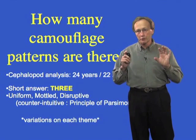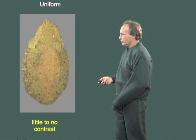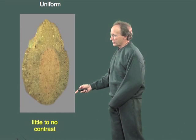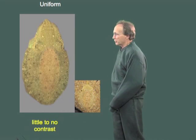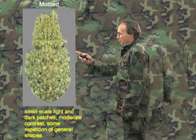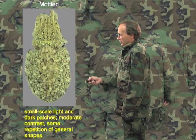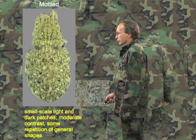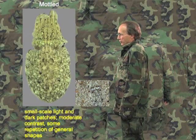Even though there are three basic pattern templates, there's a lot of variation on the theme. Here is a uniform pattern, which we define as little to no contrast — I don't care what the color or brightness is, only little or no contrast — and the same pattern from one end of the animal to the other. Mottled might be described as small-scale light and dark patches of moderate contrast, and some general repetition of the pattern.